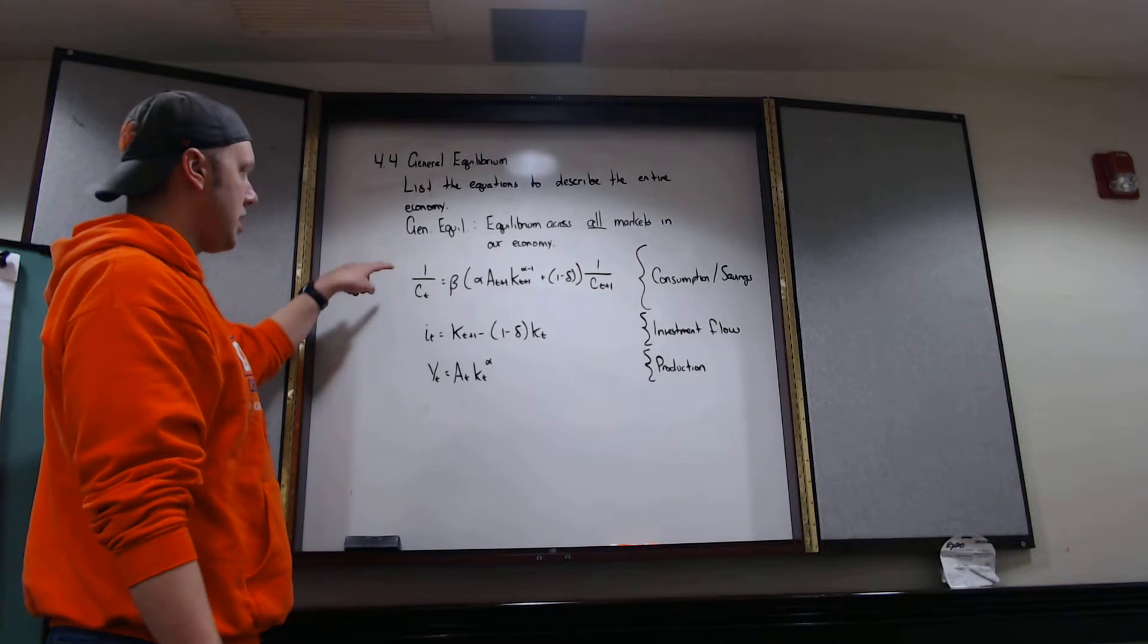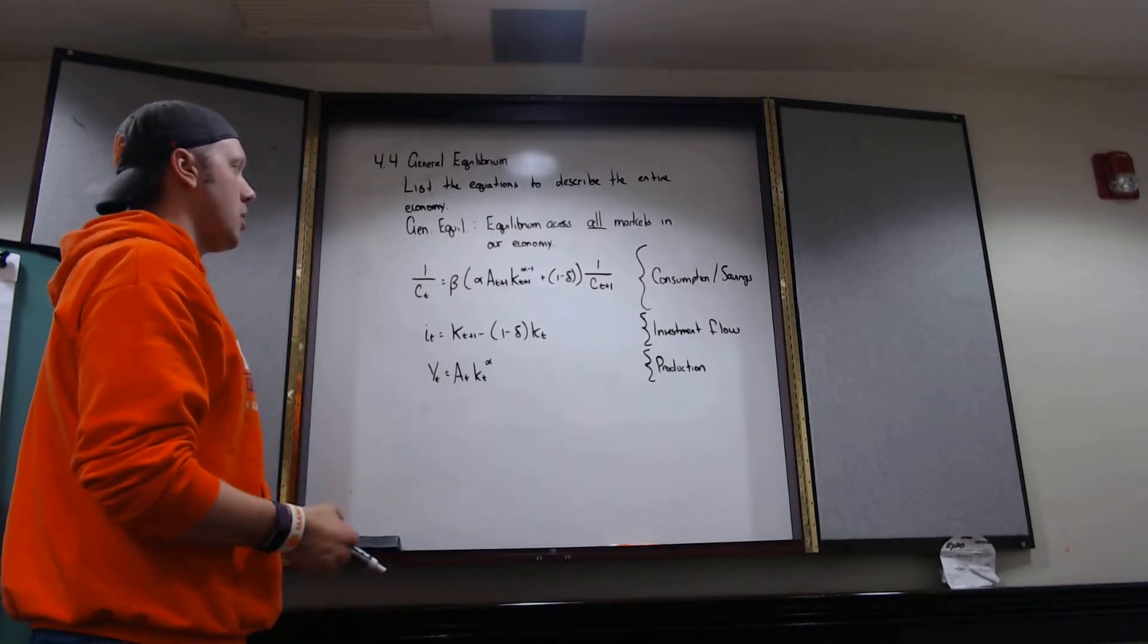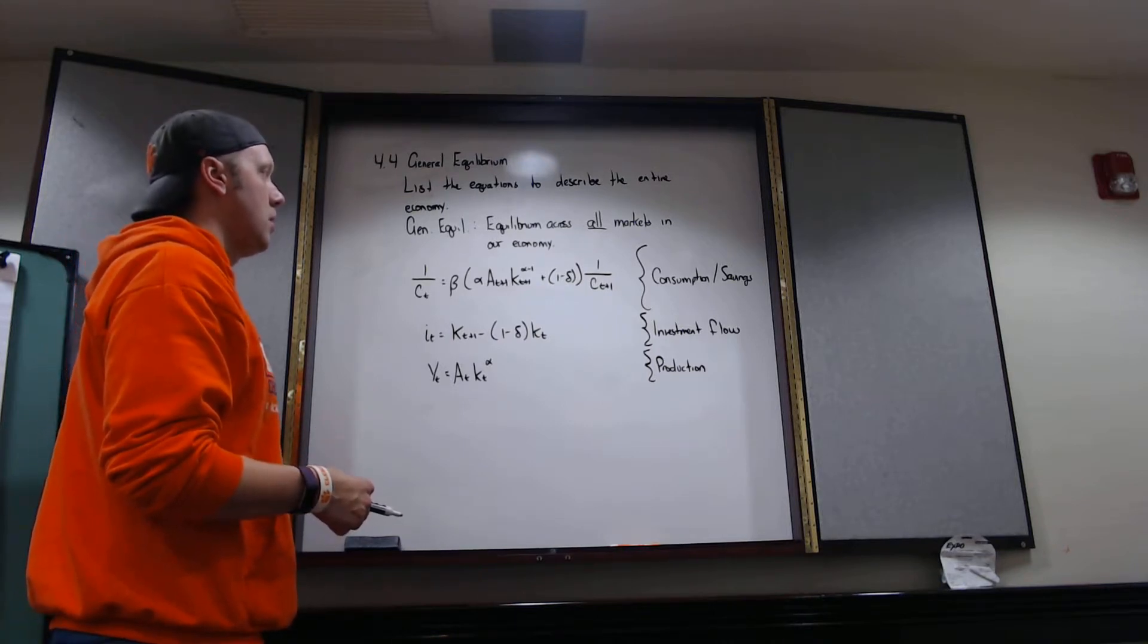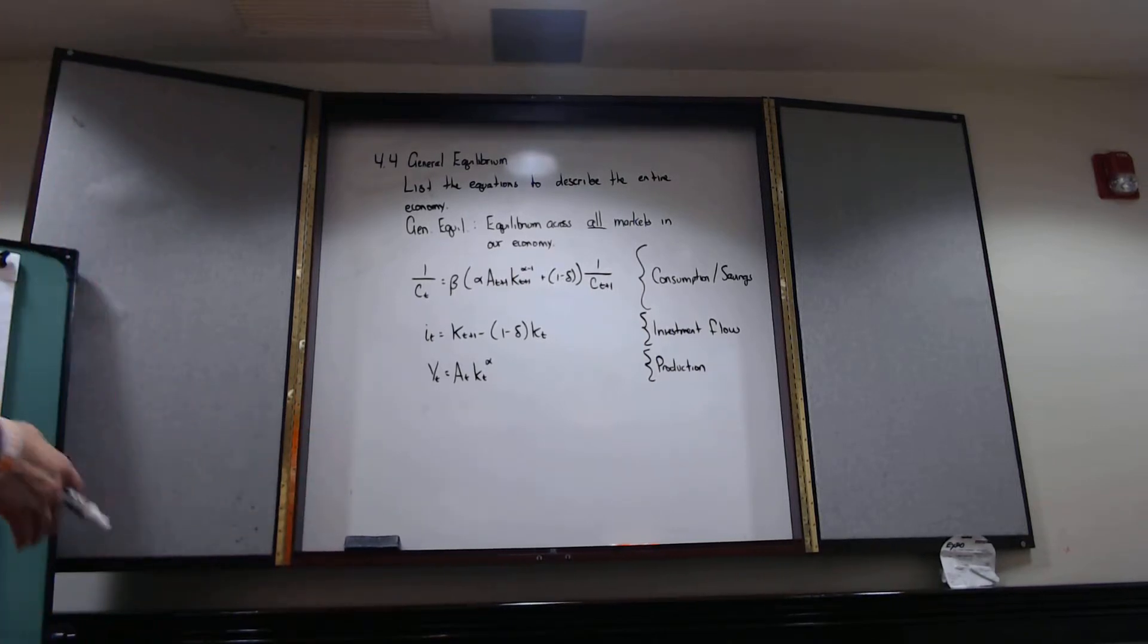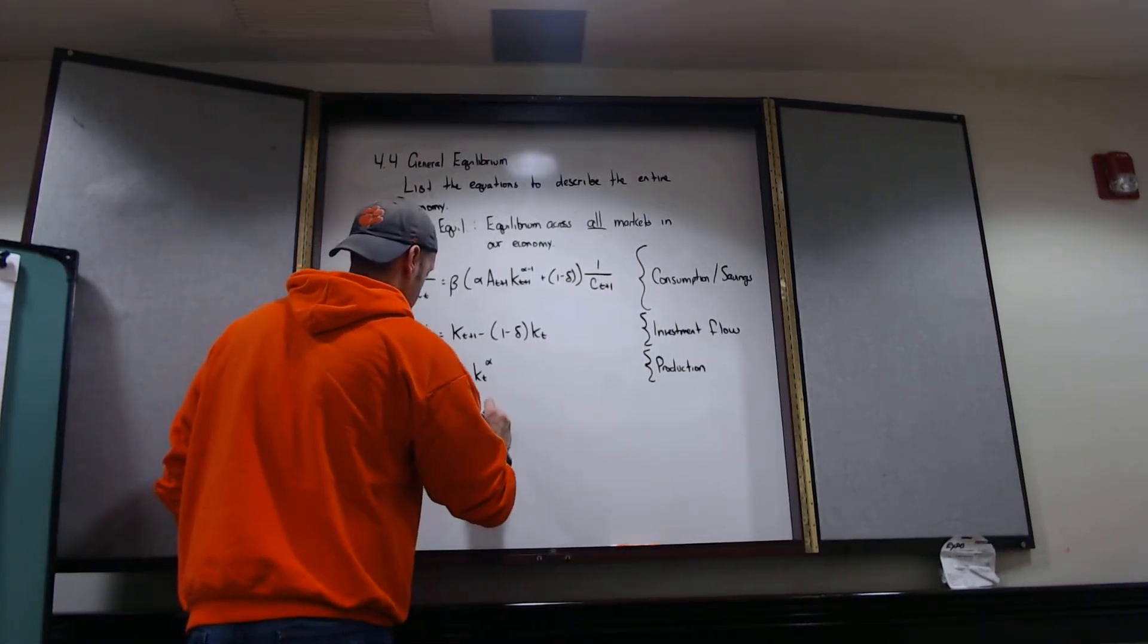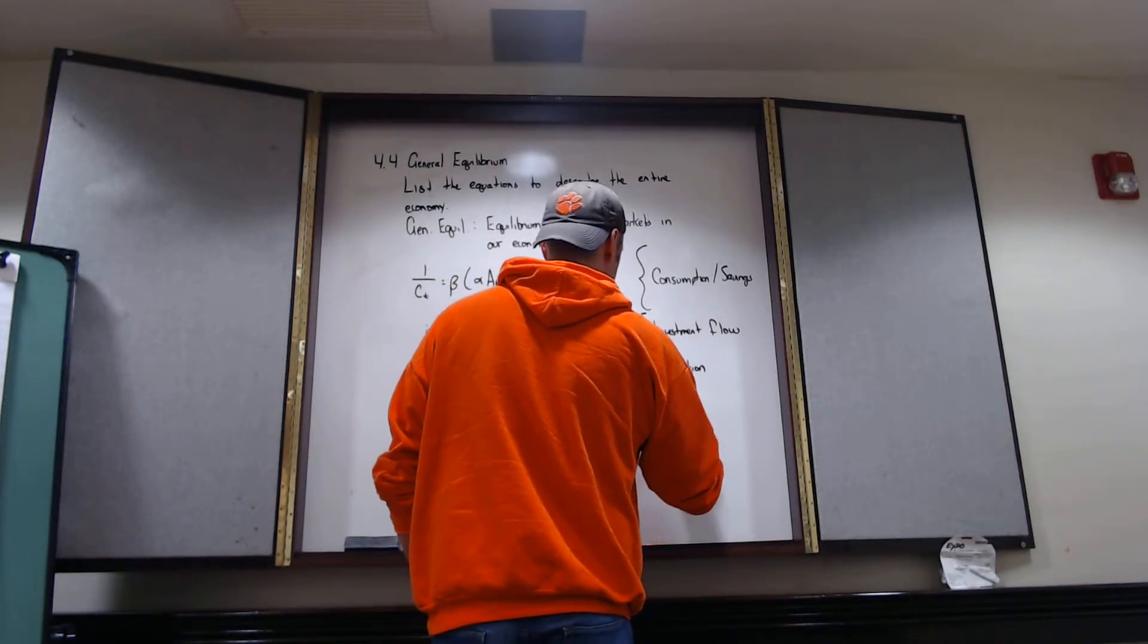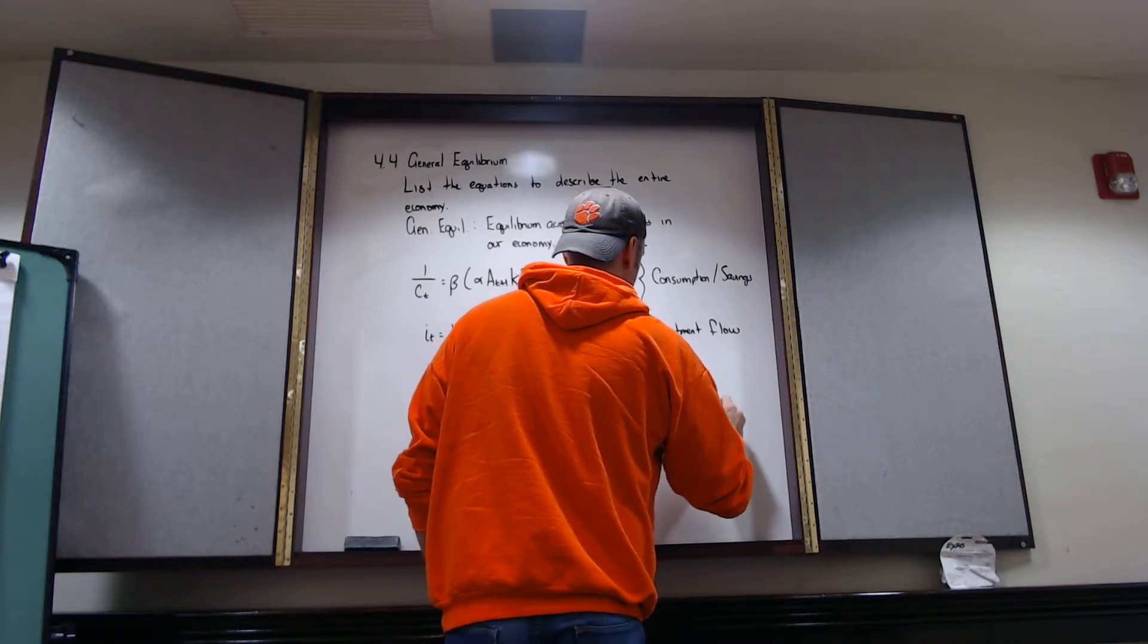So ultimately what I really need to do is I need to tie this guy, this guy, and this guy all down to make sure that they're not exceeding one side or the other. To make sure the sum of consumption and investment is not exceeding what's being produced. Hence why it's called a resource constraint.